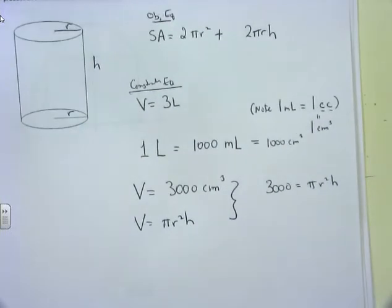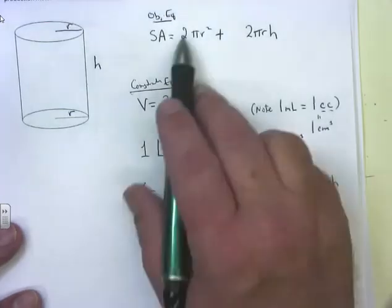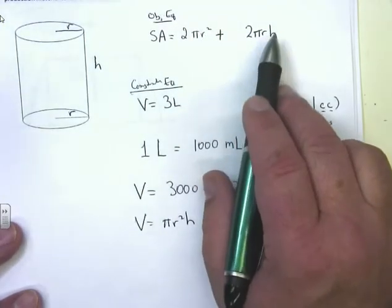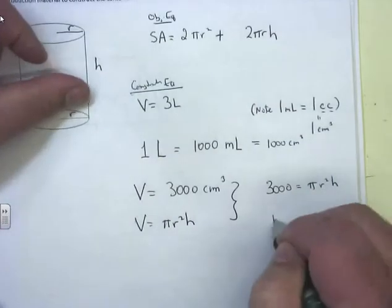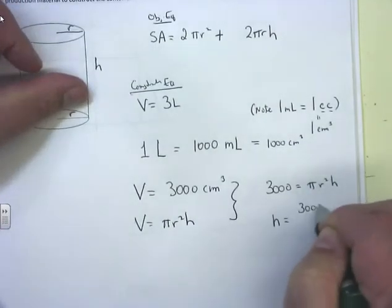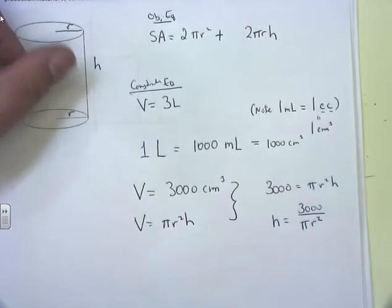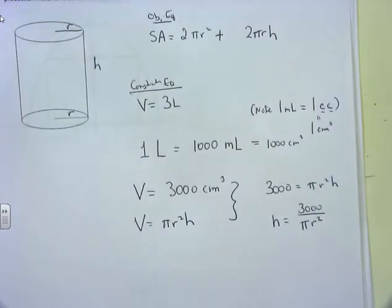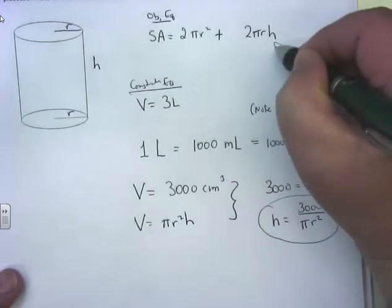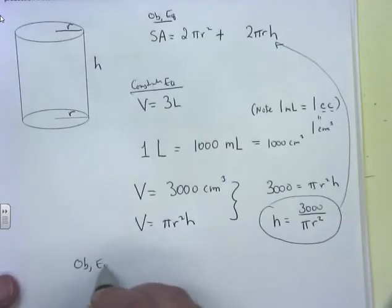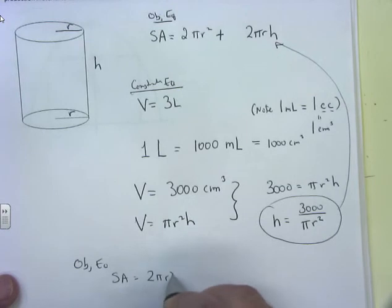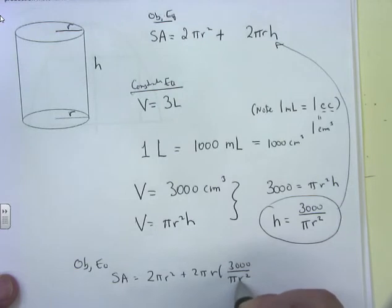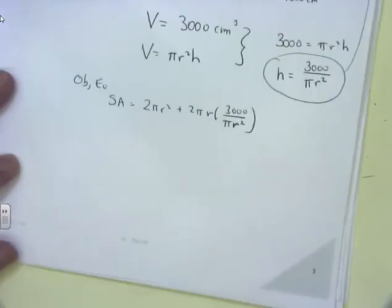Using my steps: solve the constraint for one variable and substitute it into the objective. I'll solve for h since there are multiple r terms but only one h. Solving: h equals 3,000 divided by pi r squared. Now substituting into the surface area equation: surface area equals 2 pi r squared plus 2 pi r times (3,000 over pi r squared). That's my objective equation with the constraint plugged in.